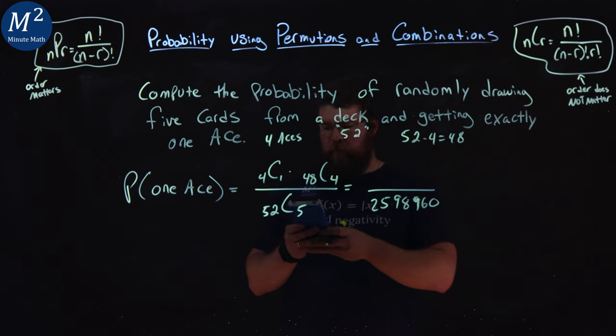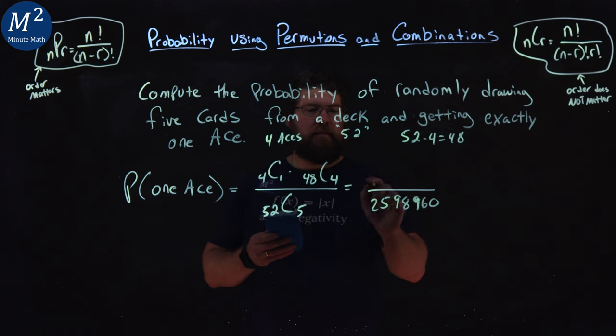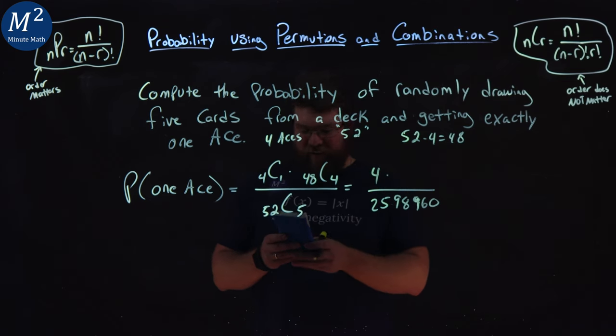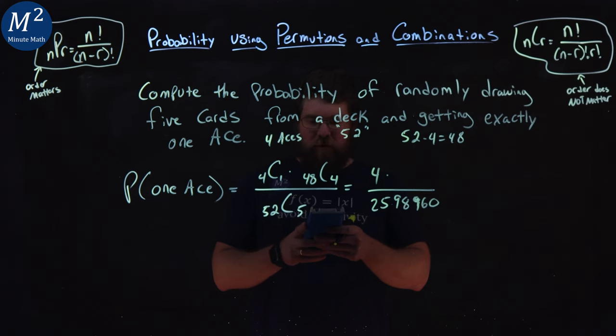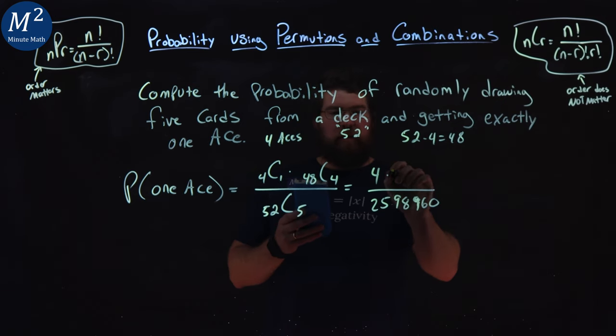And the top, let's go through the motions here. Choose one, it's good practice. Four choose one is four, and 48 choose four is 194,580.